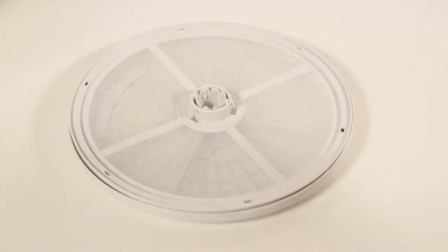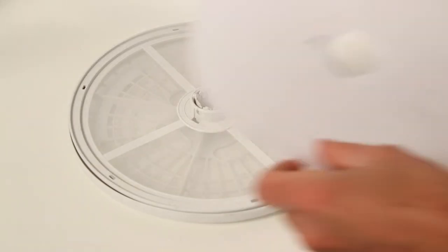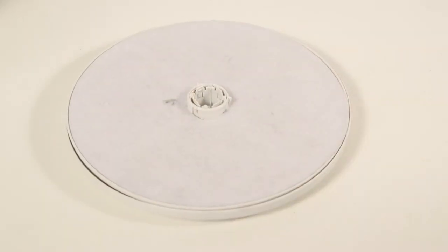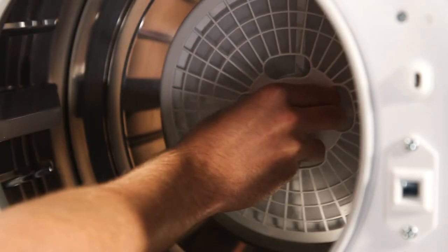After you have cleaned both the filters, reassemble the filters by placing the lint filter on the vent shroud. Then, fit the exhaust filter. You can now place the lint filter back in position.